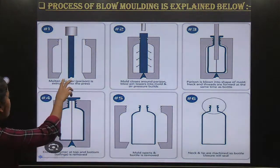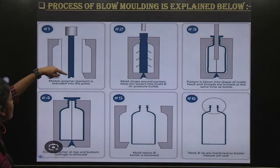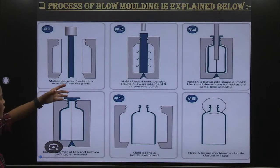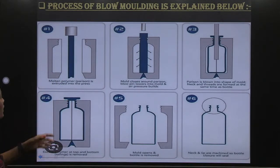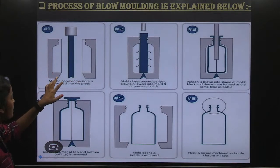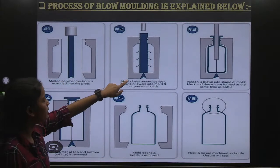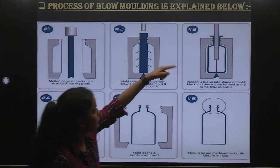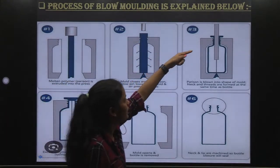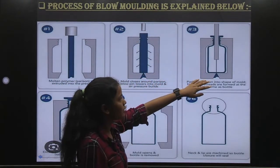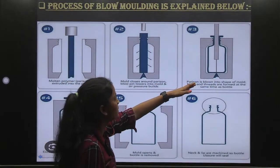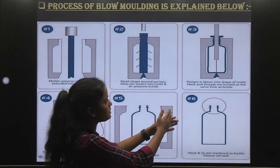The mold is used in two halves and divided. We take the parison, which is made of material formed into a hot tube shape. The parison is inserted in the two halves of the mold. Then we close the mold around the parison. There is a pipe through which high-pressurized gas passes to expand the plastic tube.